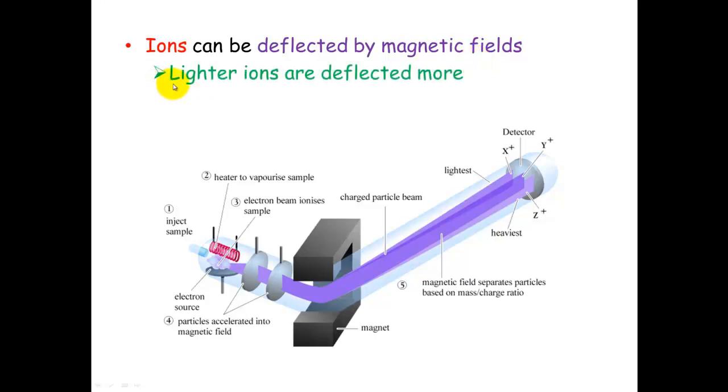What a mass spectrometer does is it has a look and it sees that lighter ions are deflected more. This makes sense. Heavier ions are deflected less.